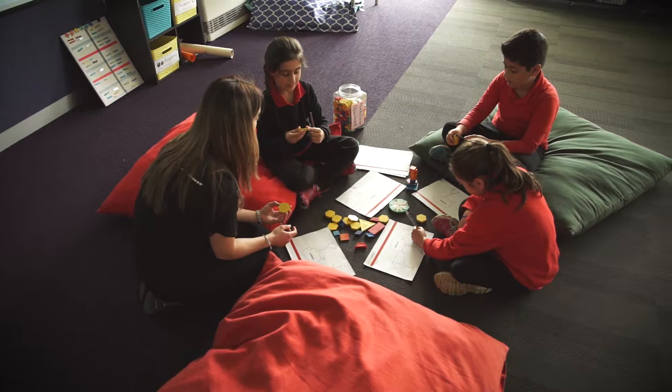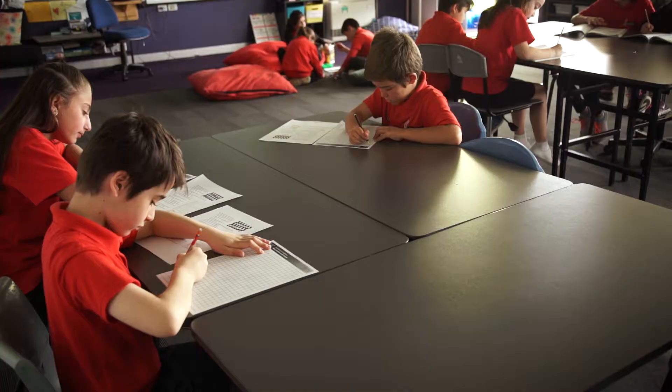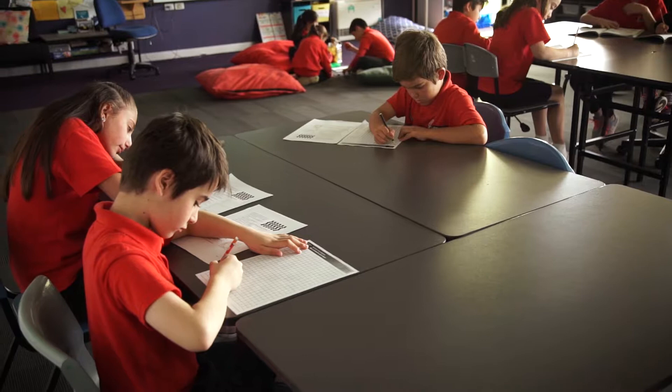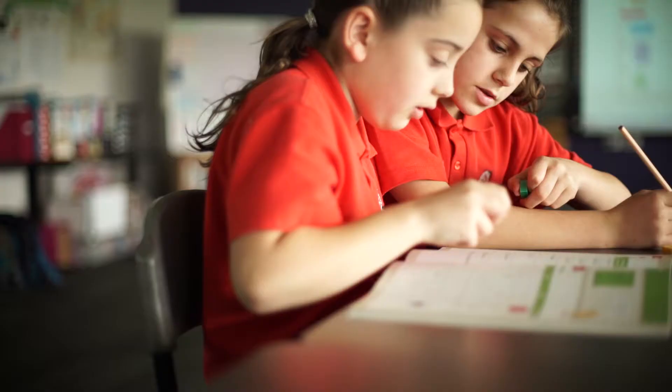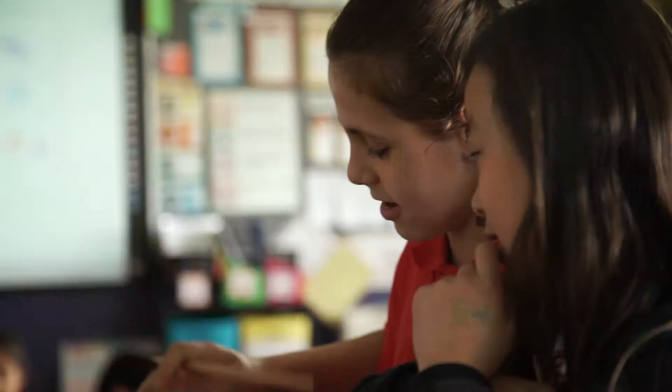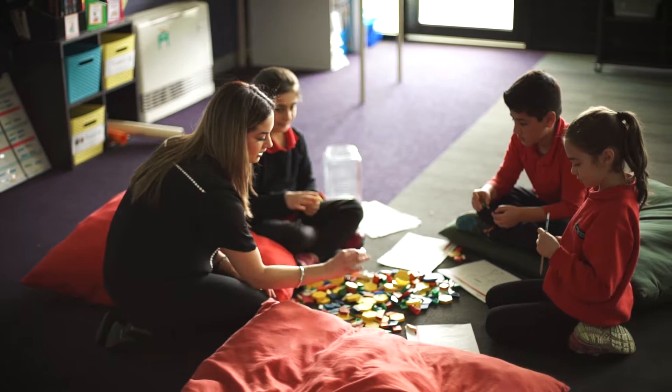You can then assign students to groups based on their level of understanding of the topic established from the pre-assessment. Students who are at standard are ready to tackle the guided and independent practice sections of the Oxford Maths student book and are provided with a follow-up activity for when they finish.